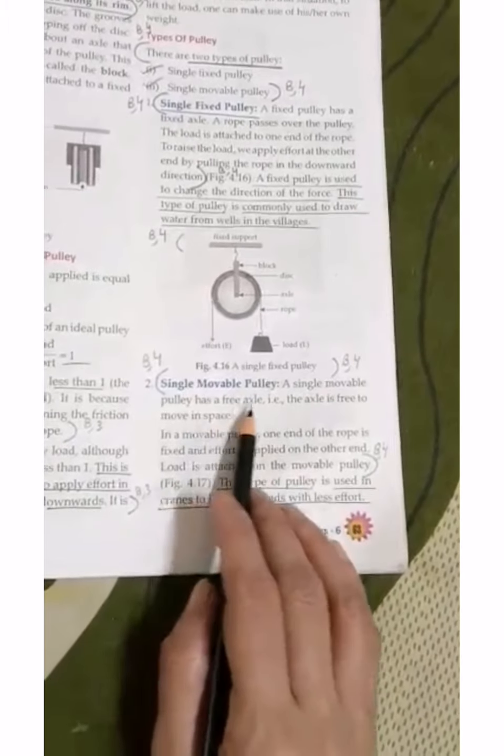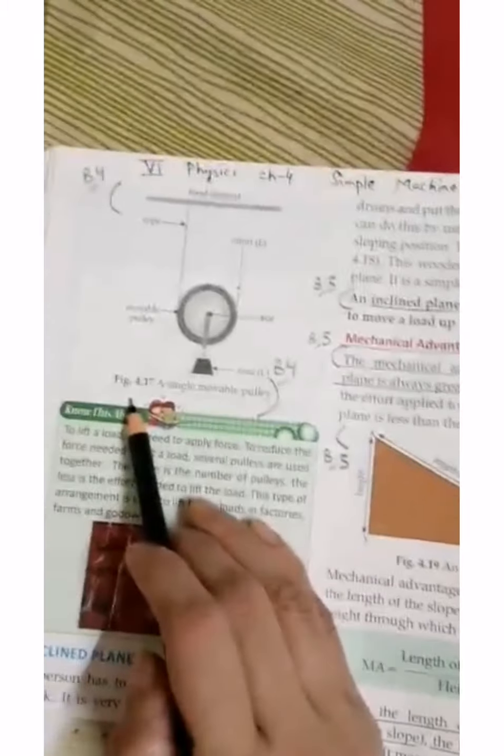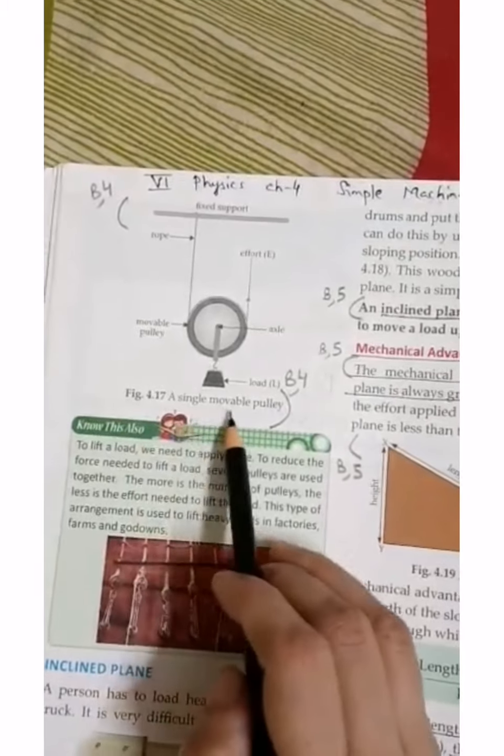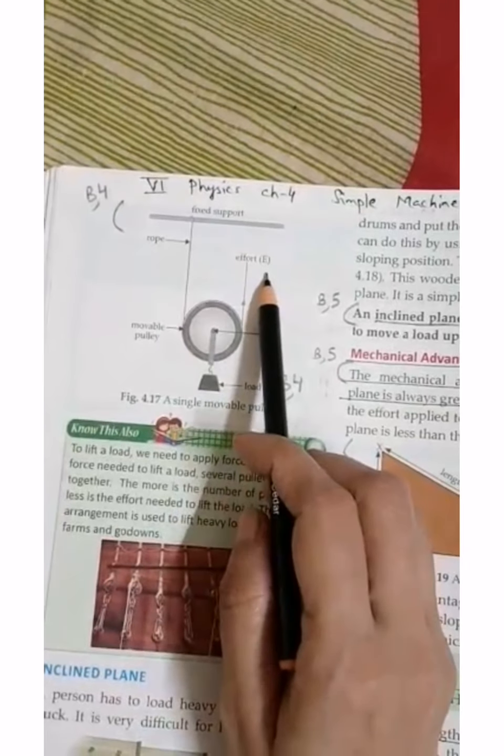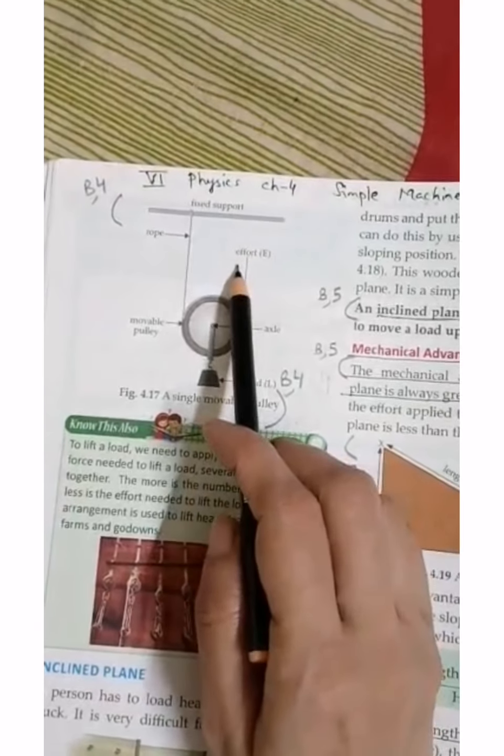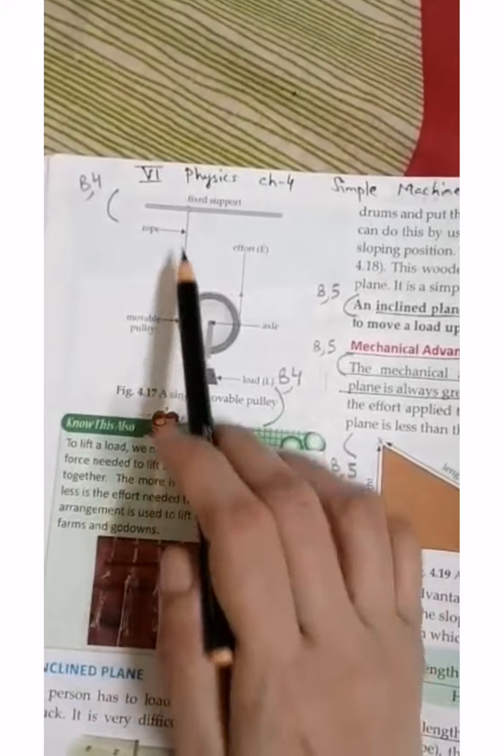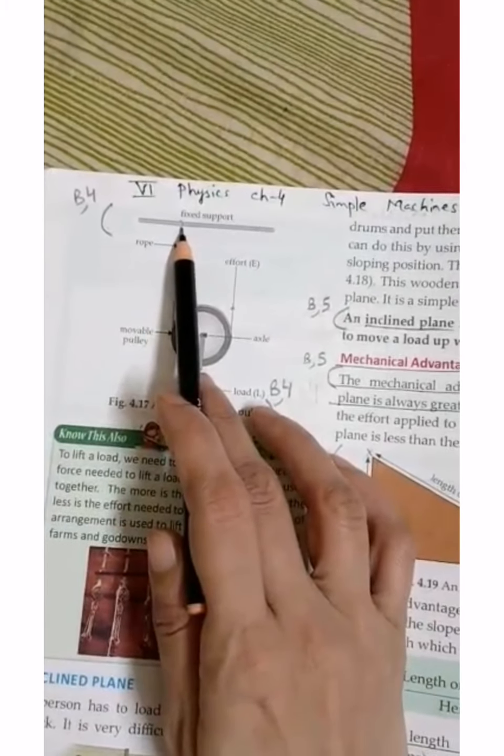Next, see here Single Movable Pulley. Here is Figure 4.17, a Single Movable Pulley. So what is one end of the rope? That is effort. And the other rope is attached with fixed support.